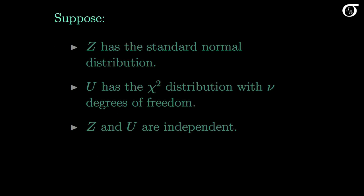Suppose we let the random variable Z have the standard normal distribution, and we let the random variable U have a chi-square distribution with ν degrees of freedom, and Z and U are independent random variables.